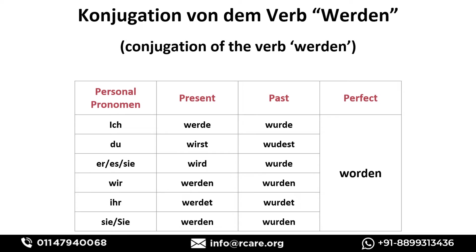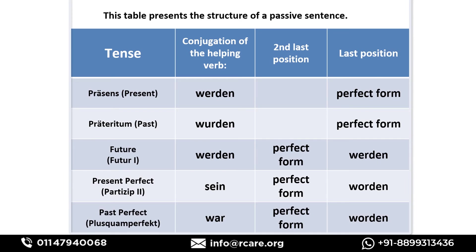When we change 'werden' into perfect form, it becomes 'worden' in all cases, because there is only one perfect form. You may have also learned that 'werden' in perfect form becomes 'geworden' sometimes — but 'geworden' is only used when 'werden' is a full verb, not a helping verb. In passive sentences, 'werden' is only used as a helping verb. 'Geworden' is used for future tense or when 'werden' is a full verb.